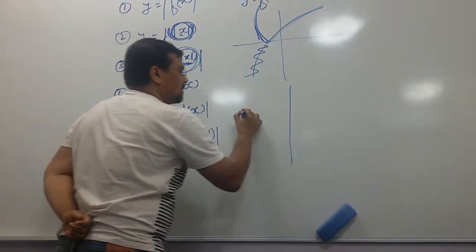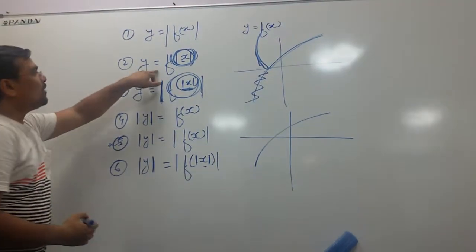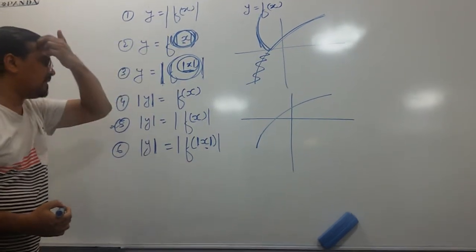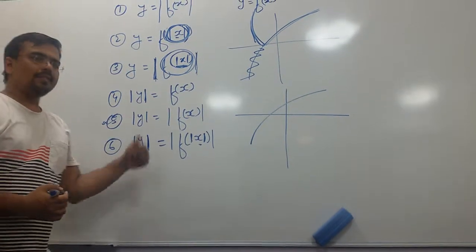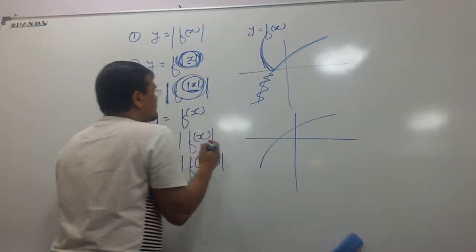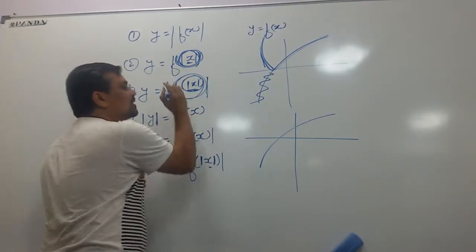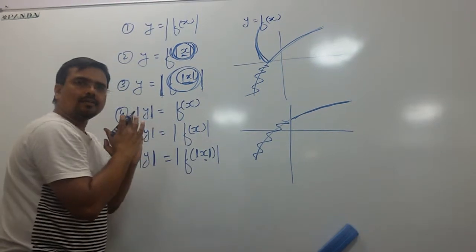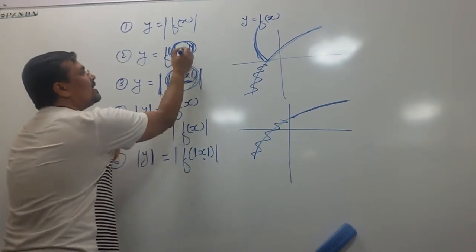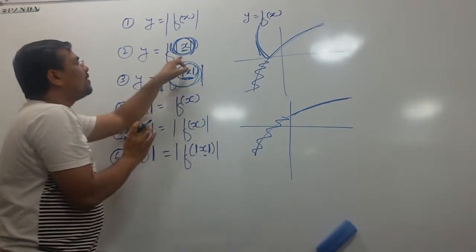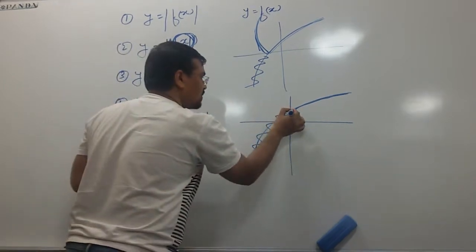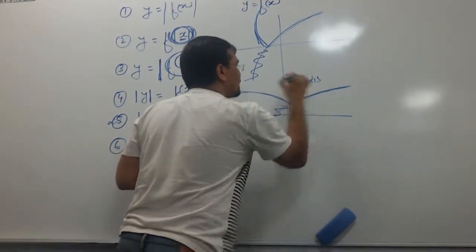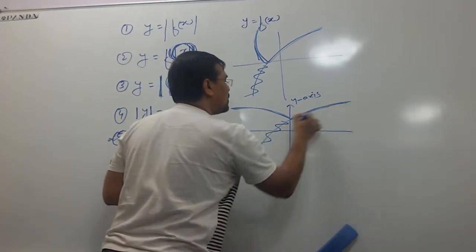How would number 2 graph look? y equal to f of absolute value of x means for positive x or negative x, the figure would be the same. The function would follow only the positive value of x, so I will reject the negative part of x. Whether x is positive or negative, the function follows the positive side of x, so the graph would be symmetrical about the y-axis. This is how the final graph of number 2 looks.